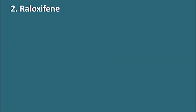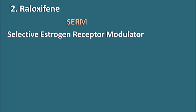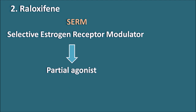The second drug is raloxifene, a SERM — a selective estrogen receptor modulator. SERMs act as both agonists and antagonists. Raloxifene acts as a partial agonist, producing estrogenic agonist actions on bone while also antagonizing some other actions of estrogen. It decreases osteoporosis by increasing osteoblast activity — bone formation — and decreasing osteoclast activity — bone resorption. Side effects include hot flashes and vaginal bleeding, as it is an estrogen receptor modulator.